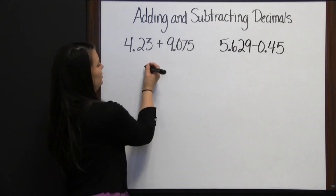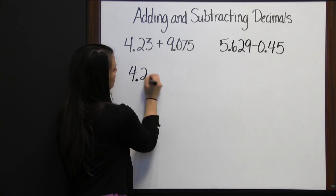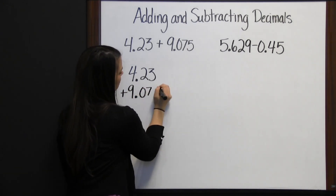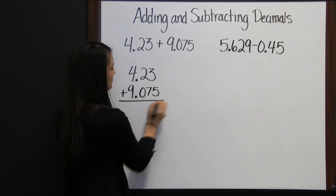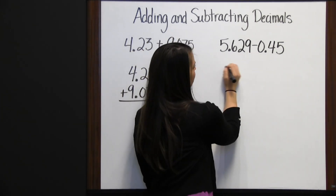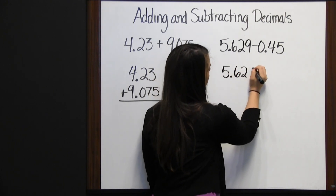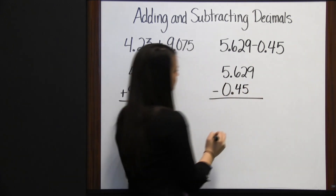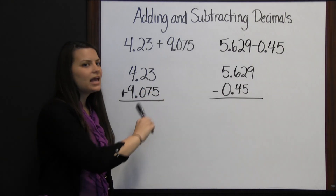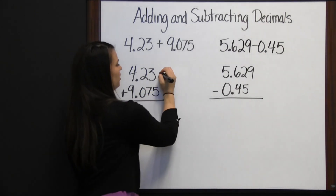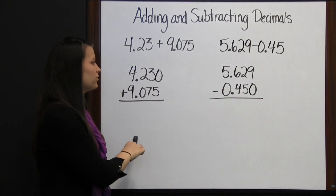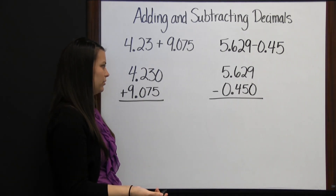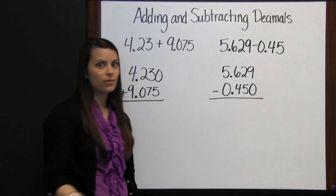When adding and subtracting decimals, first line up the decimals. For example, four and twenty-three hundredths plus nine and seventy-five thousandths, or five and six hundred twenty-nine thousandths minus forty-five hundredths. If you have any empty spaces, you can fill them in with zeros. Adding zeros to the back of a decimal doesn't change the value of the number, so these numbers are still equal.